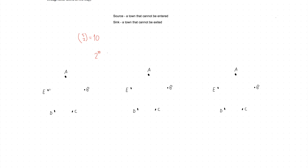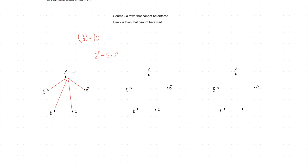Now consider configurations with a sink, regardless of whether a source is present. Assume town A is the sink—that means all four roads connected to A are fixed pointing inward. The remaining six roads can be anything, giving 2^6 arrangements. Since any of the five towns could be the sink, the count is 5 × 2^6.